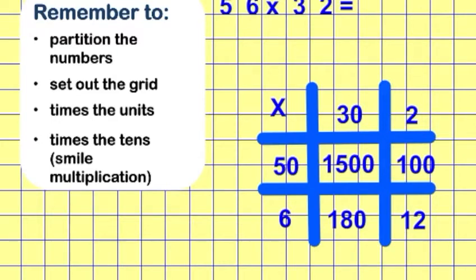Now I've got all those numbers in there, I can add them together and answer my question. So let's start with 1500, I'm going to add 100, that's 1600. Add 180, that's 1780. Plus 12 is 1792. Hopefully that explanation has helped.